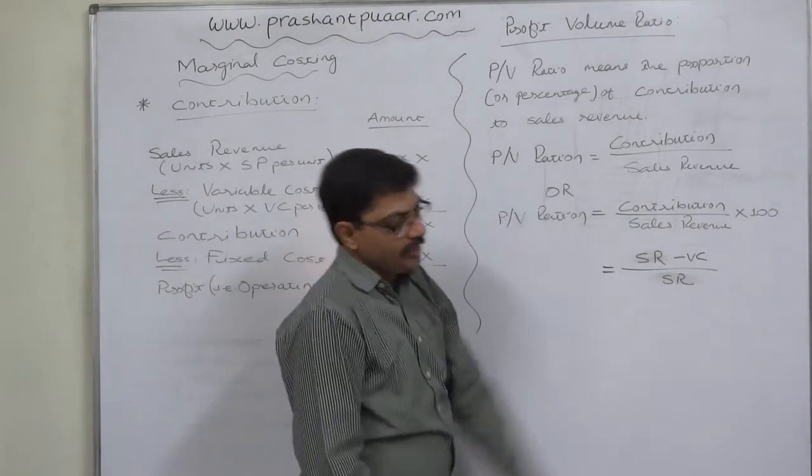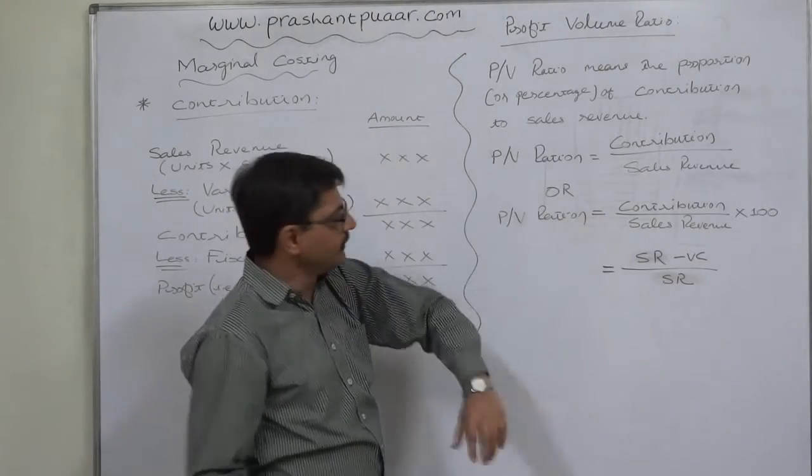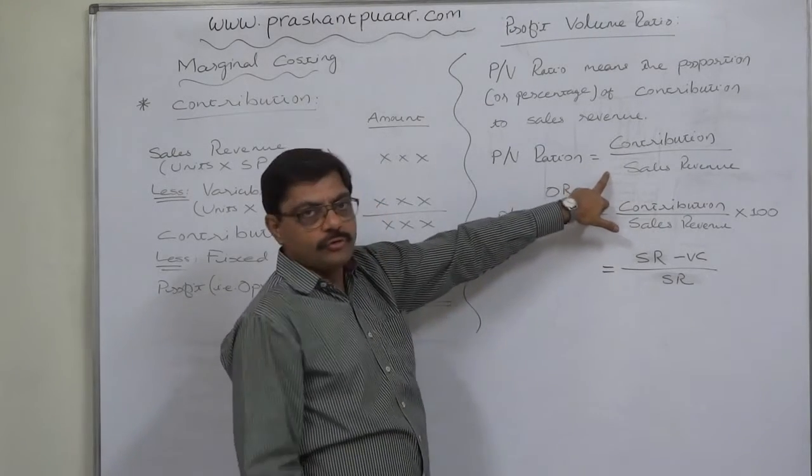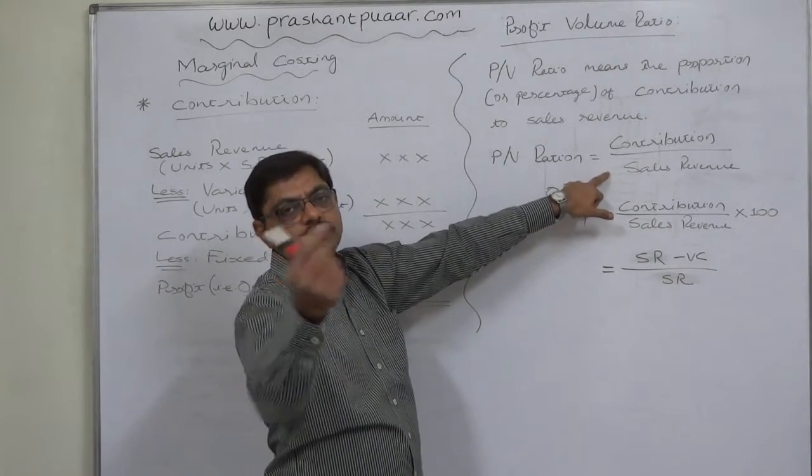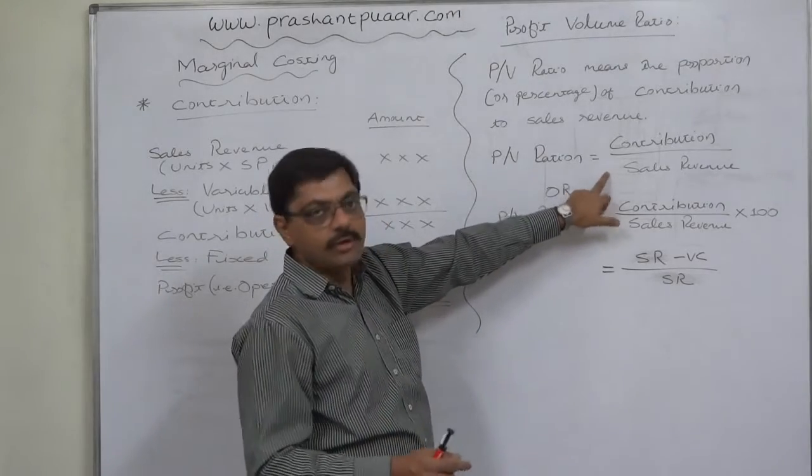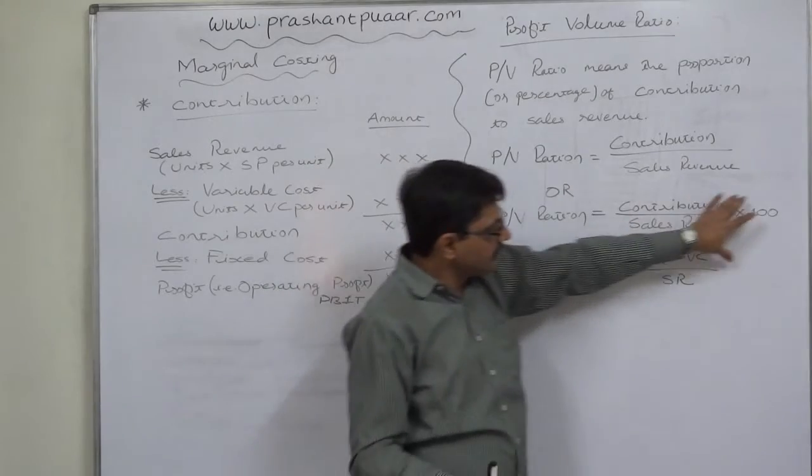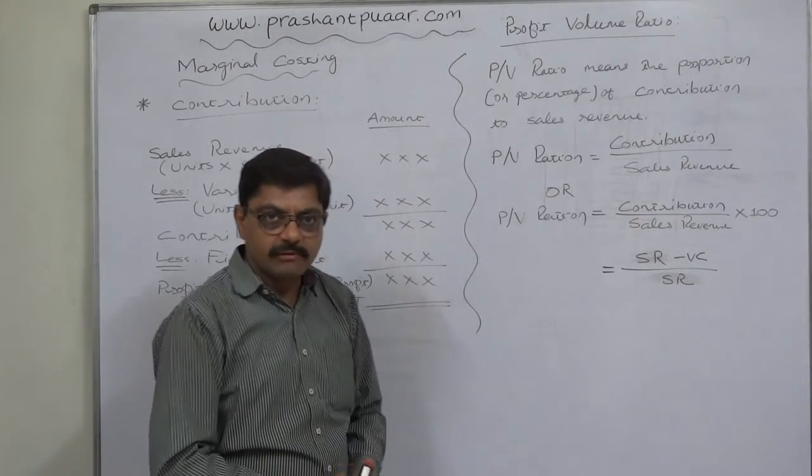These are the formulae to calculate PV ratio. Very easy formula: contribution by sales. This formula gives us the proportion of contribution to one currency unit of selling price, say 1 rupee or 1 dollar or 1 euro. This formula gives us the PV ratio as percentage of sales revenue.